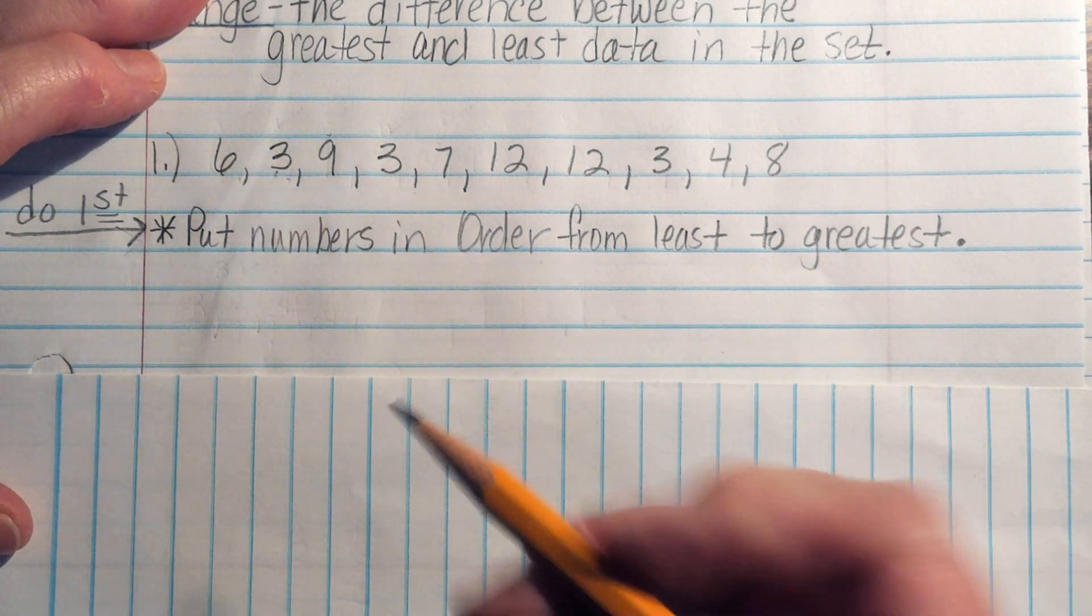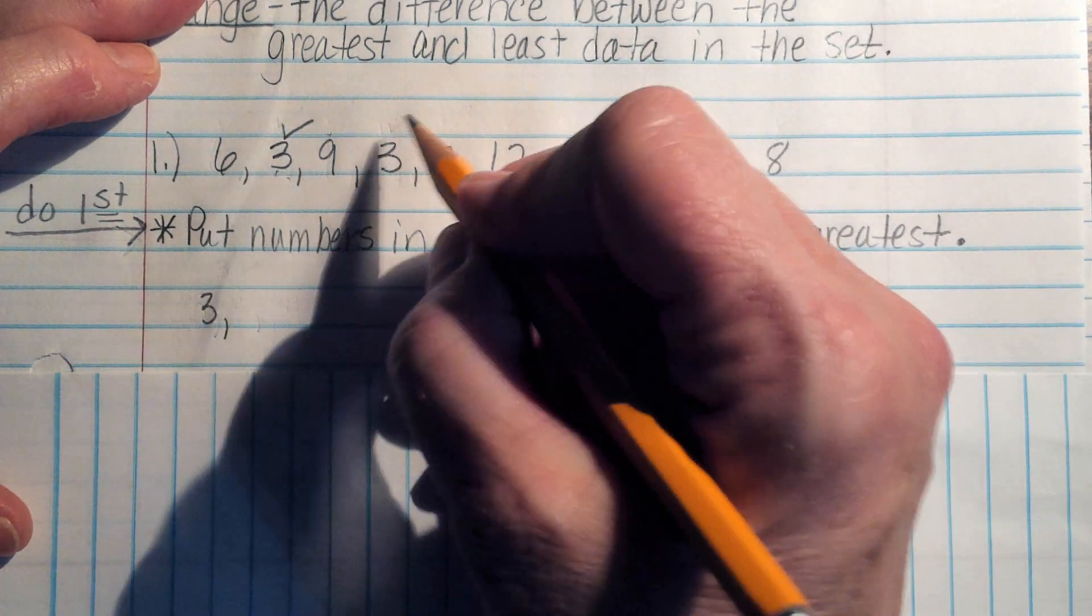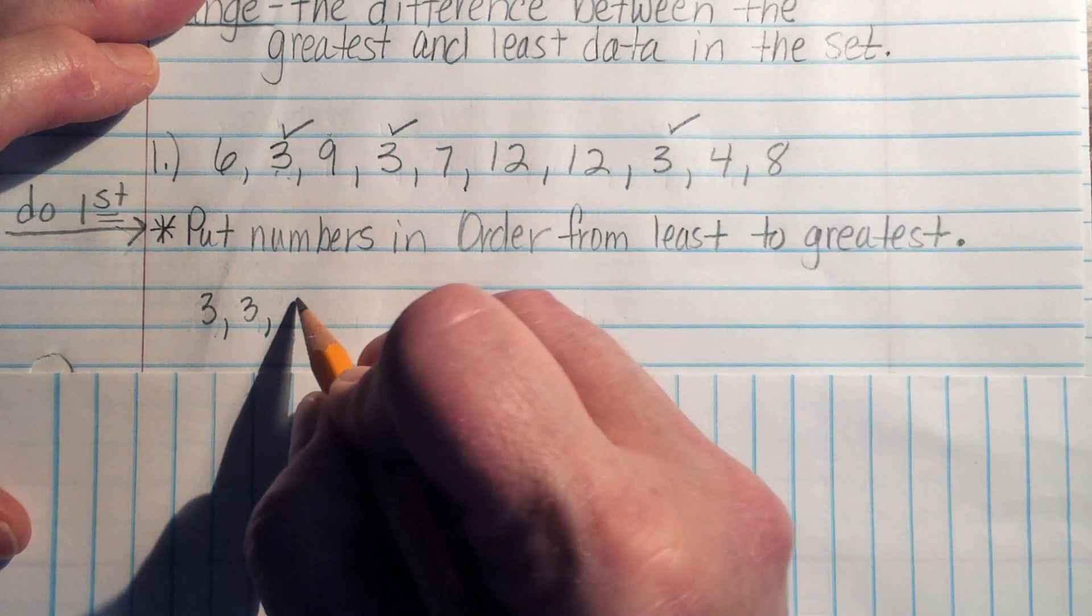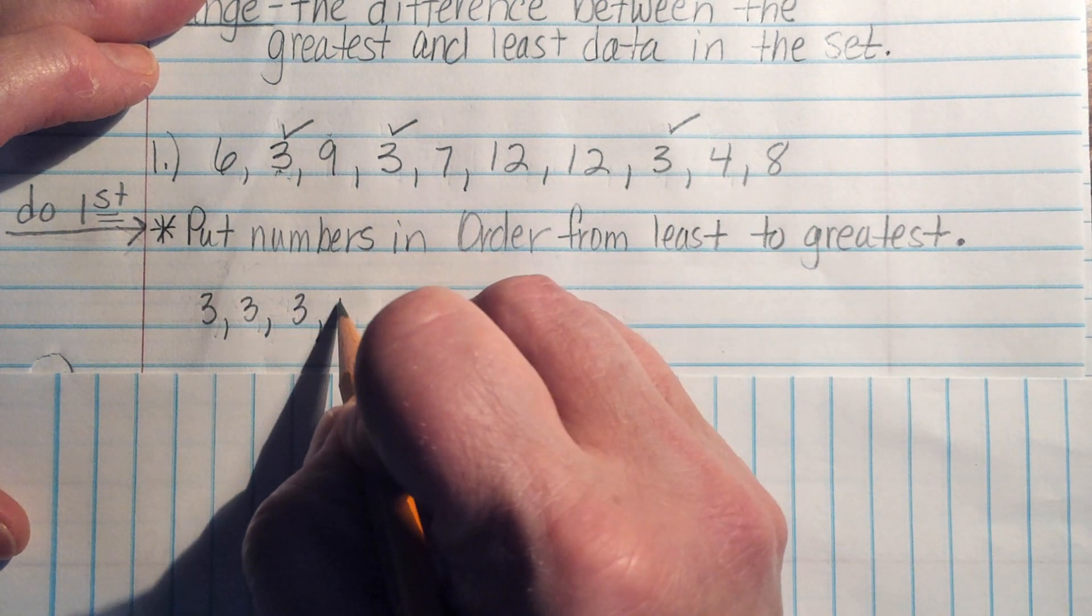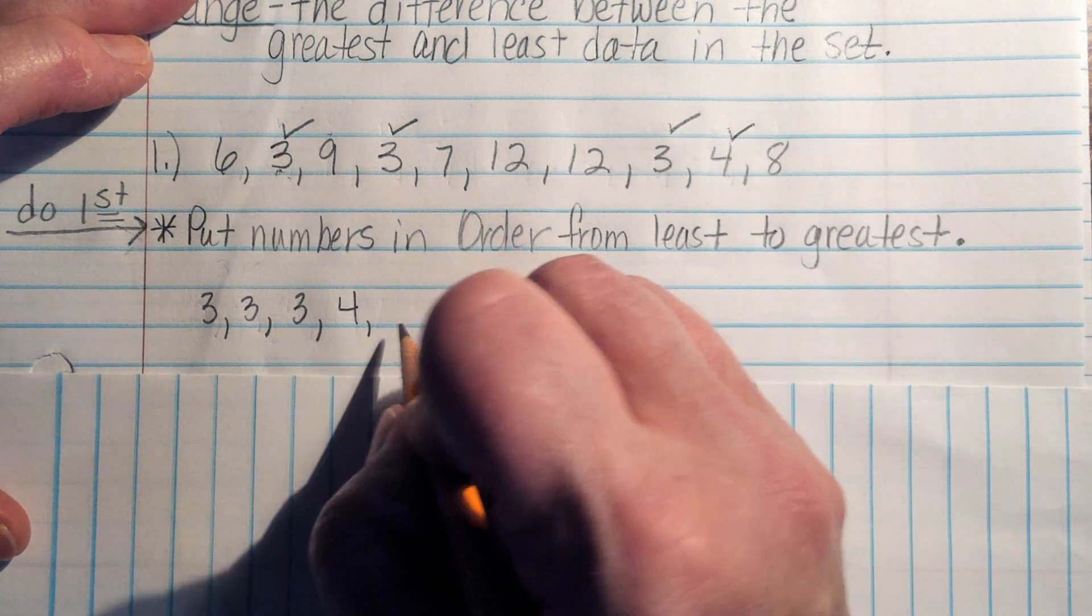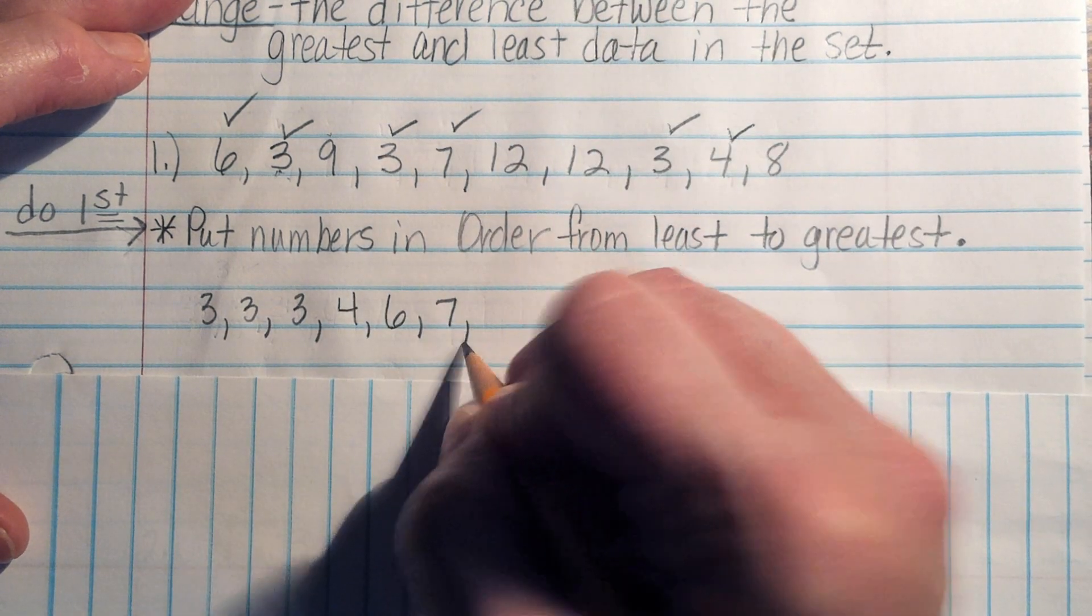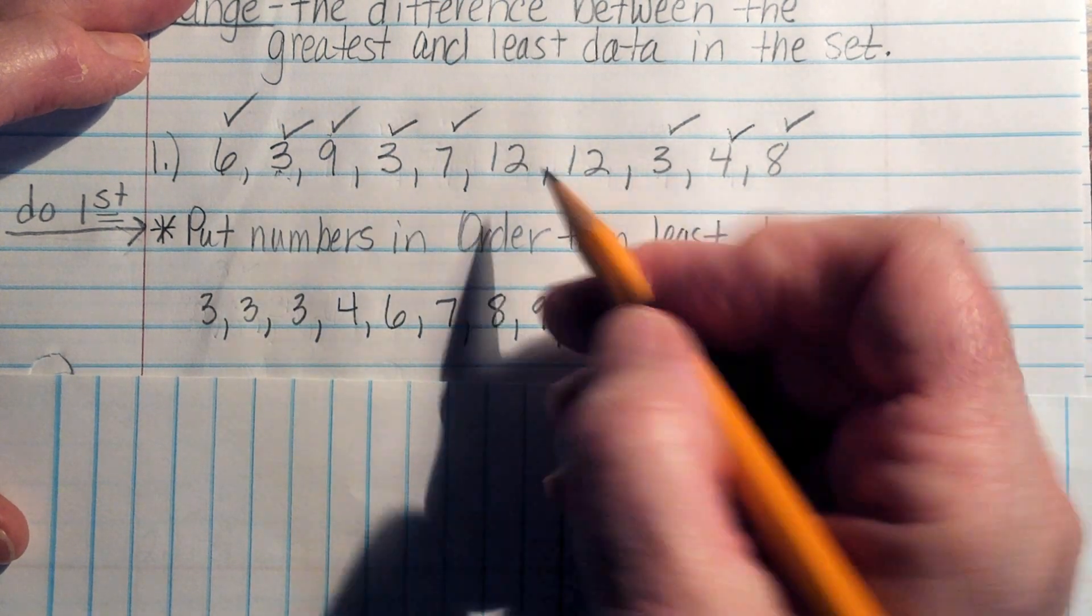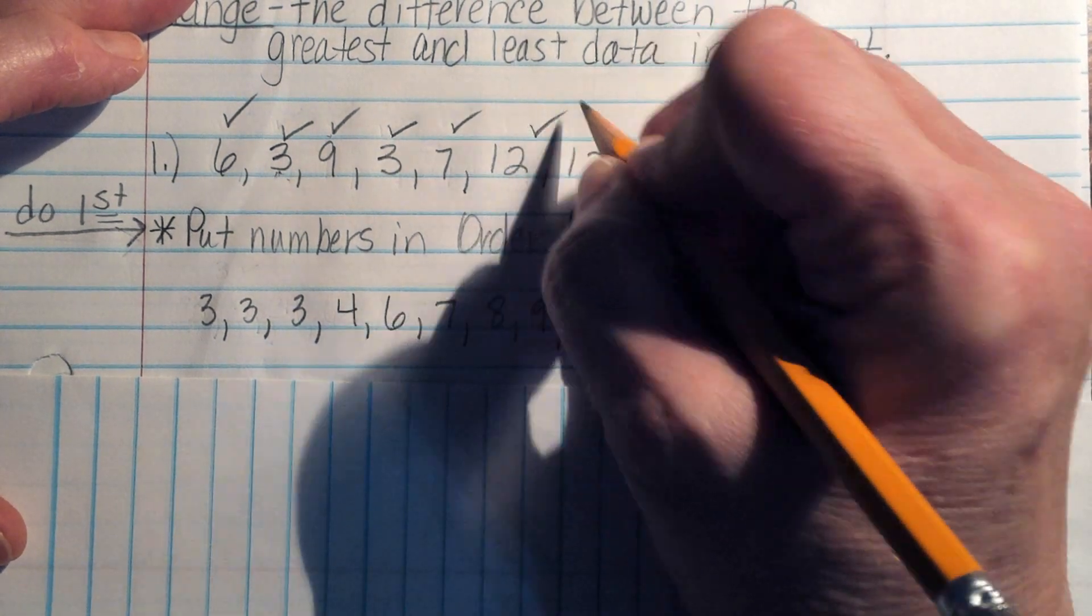I see that 3 is my smallest number, so I'm going to record those, and as I do that, I'm going to go through and I'm going to check off on top that I've recorded them. So I have one, two, three threes. Then I see a four. No fives. We've got a six right here. A seven. Eight. Nine. And the last two numbers, I see we have two twelves.